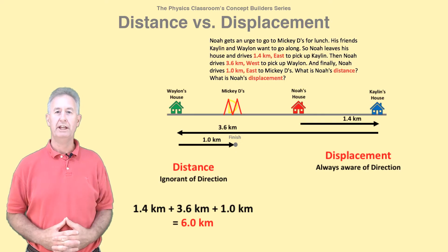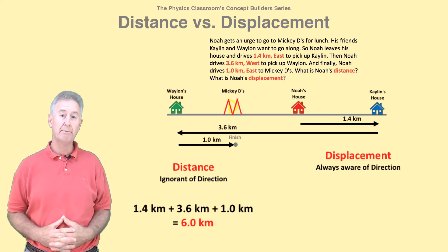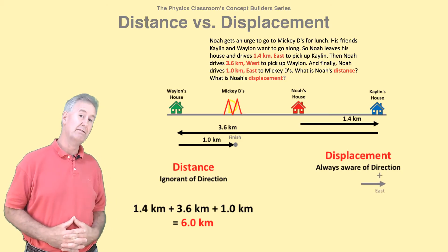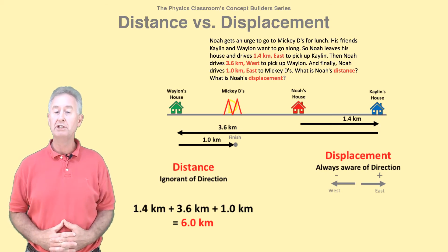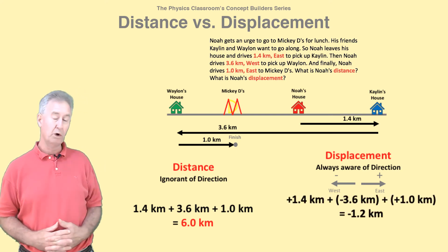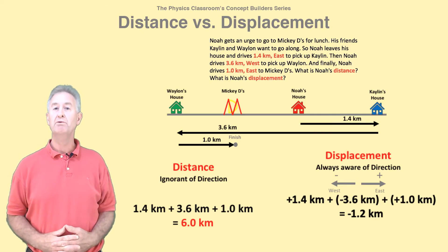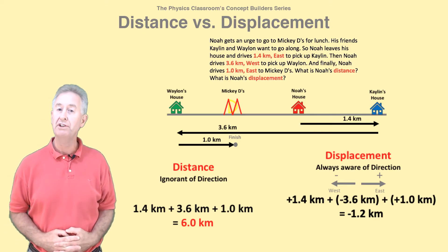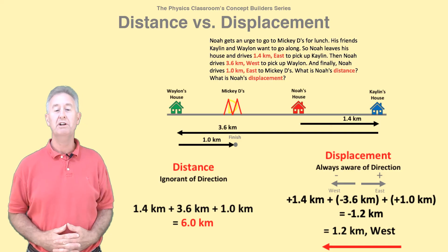Displacement is the direction-aware quantity. It pays attention to the direction of each leg of this three-legged trip. East is positive, which makes west negative. Adding the three displacement vectors: positive 1.4 kilometers plus negative 3.6 kilometers plus positive 1.0 kilometers. The result is negative, meaning the displacement is directed west. The resulting displacement for this trip is 1.2 kilometers west.